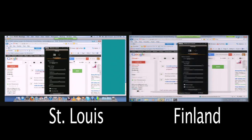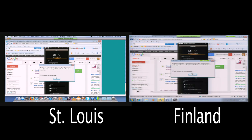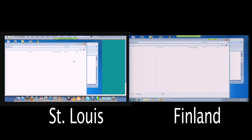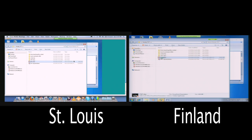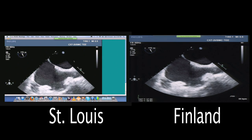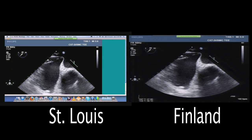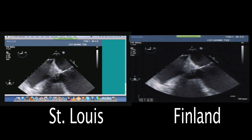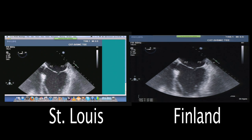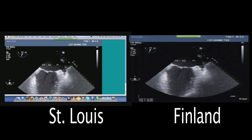Now I'm looking at Finland's desktop. The person in Finland can share whatever they have to share, and it's showing up on the desktop in St. Louis. Finland can click through their content, and if I'm on the phone with them I can comment on whatever we're looking at. If Finland points on their desktop, it shows up in the St. Louis desktop too, so they can highlight whatever it is they want to show.